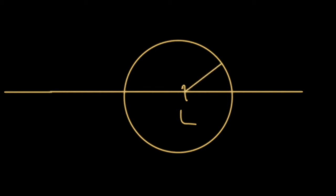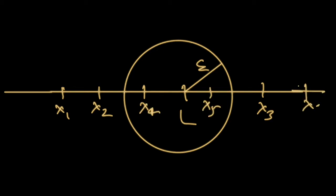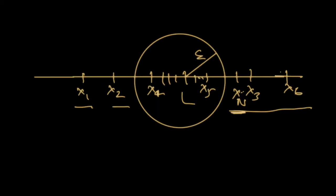If the limit of the sequence is L, and you draw a circle of radius epsilon around L, then all the terms except finitely many — say x1, x2, x3, and so on — will eventually lie inside this circle. There exists some N such that after x_N, all subsequent terms are inside the circle. So we only need to compare finitely many terms outside and the circle radius.